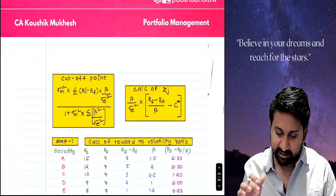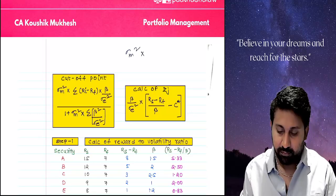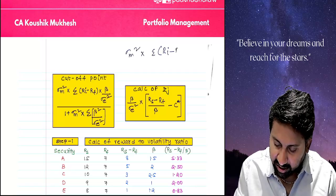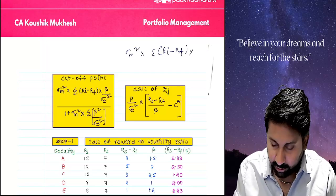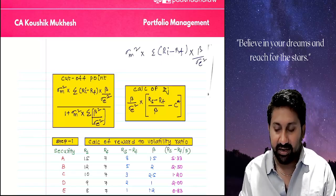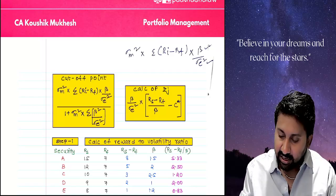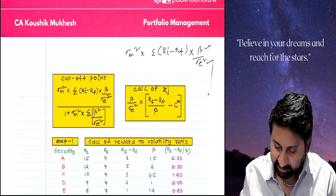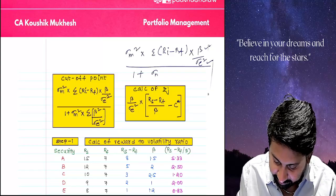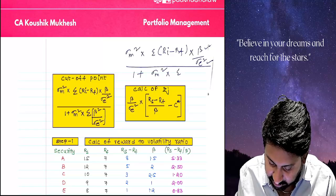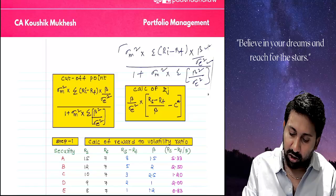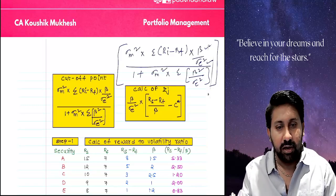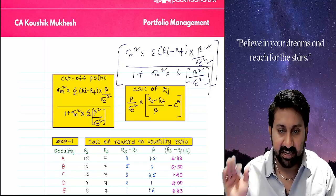See the screen. The cutoff point formula is: market variance (σM²) multiplied by the summation of [(Ri − Rf) × β / σei²], divided by [1 + σM² × Σ(β² / σei²)]. Here, beta is a measure of systematic risk and σei² is a measure of unsystematic risk — so it represents the ratio of systematic risk to unsystematic risk. Once you remember this formula, just put in the numbers and calculate.